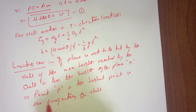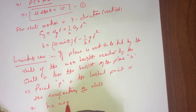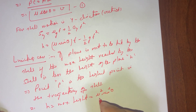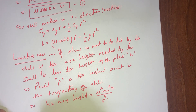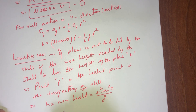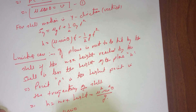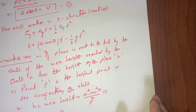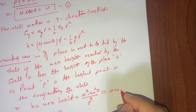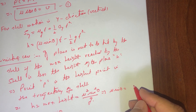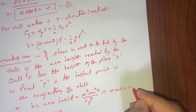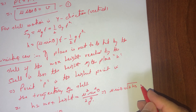So we can clearly write that h, which is the maximum height, will be equal to u²·sin²θ divided by 2g. And the time to reach this maximum height will be equal to u·sinθ divided by g. From this equation, we can write that u·sinθ = √(2gh). Let us call this equation number two.